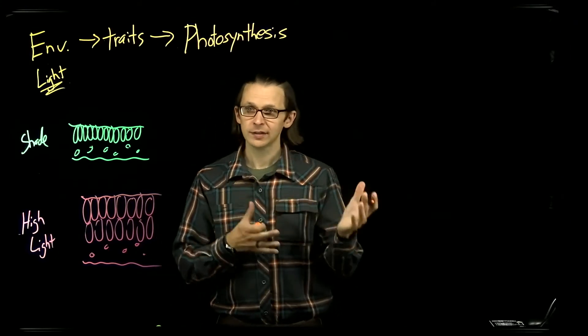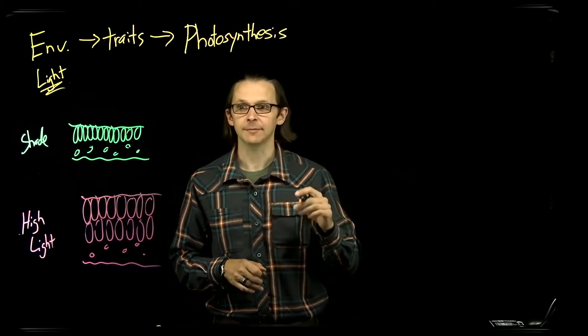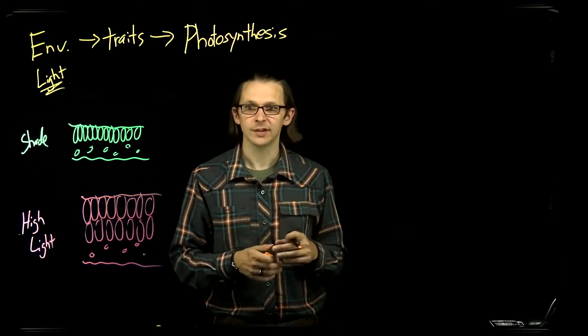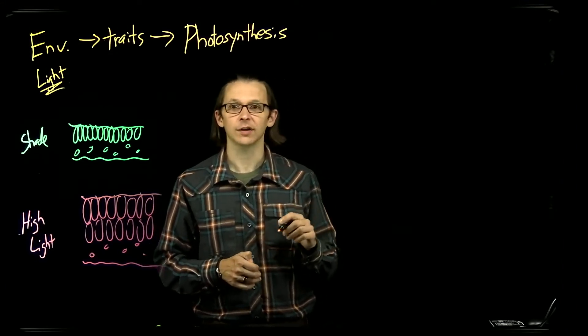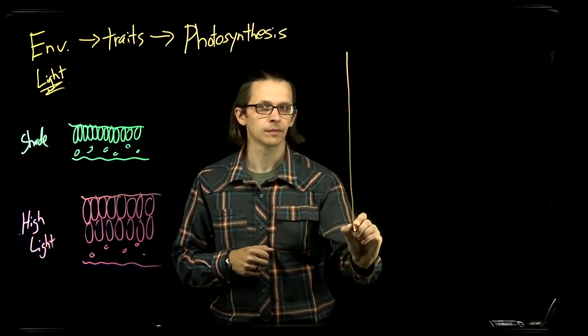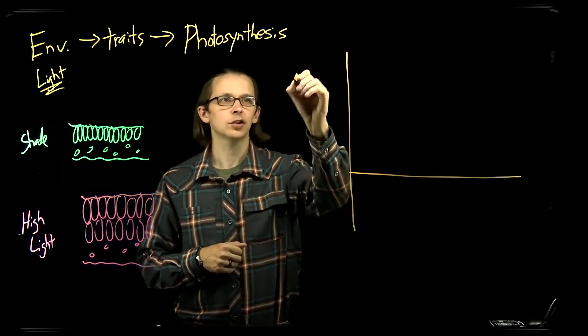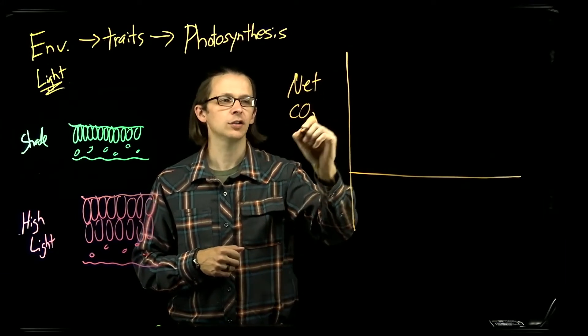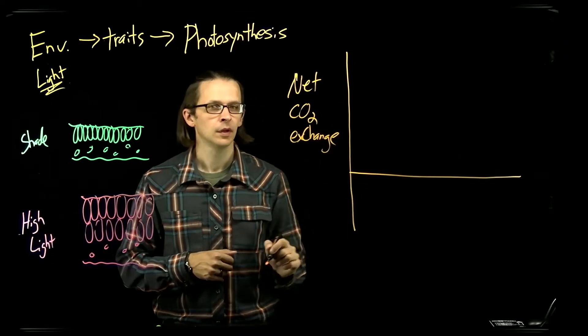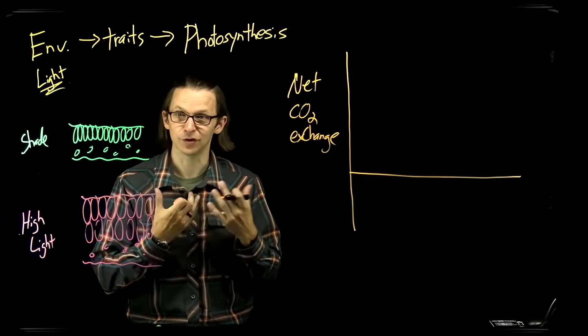So now if we translate that into the functional attributes of photosynthesis in response to light, there's a key relationship that we often use to describe differences in leaf traits and photosynthetic rates, and that is a light response curve of photosynthesis. So if we look at the relationship between the net CO2 exchange...